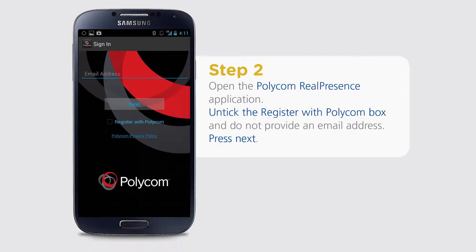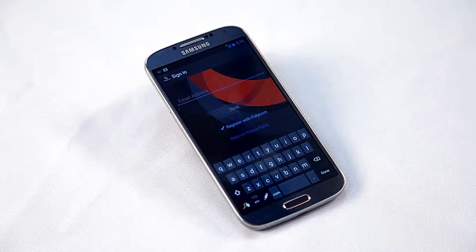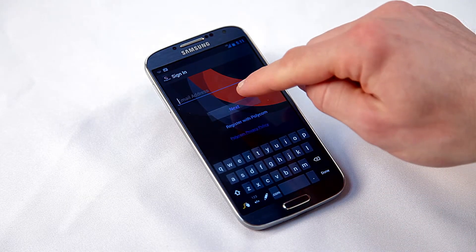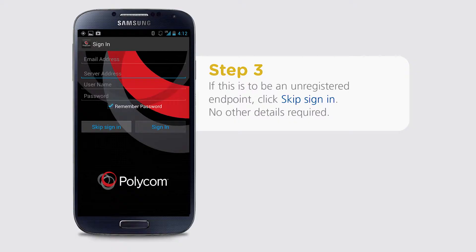Untick the register with Polycom box and do not provide an email address, then press Next. If this is to be an unregistered endpoint, click Skip Sign In. No other details are required.